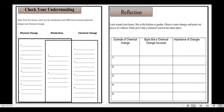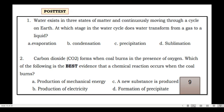You may now answer the check your understanding section — compare similarities of physical and chemical change in the middle, and the differences on each side, like a Venn diagram. Then answer the reflection. Now let's proceed with the post-test. Number 1: Water exists in three states of matter and continuously moves through a cycle on earth. At which stage in the water cycle does water transform from a gas to liquid? A. Evaporation. B. Condensation. C. Precipitation. Or D. Sublimation.